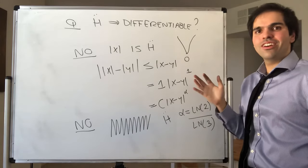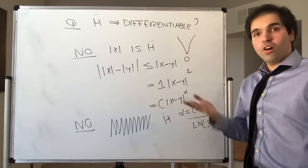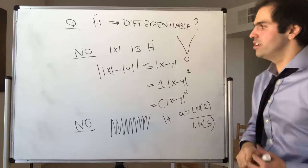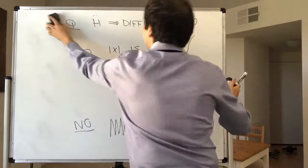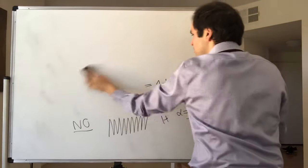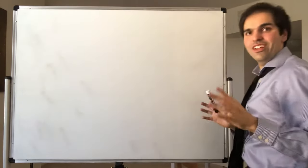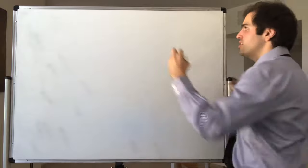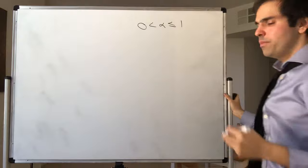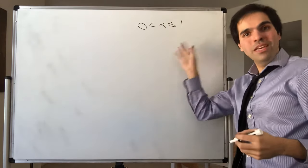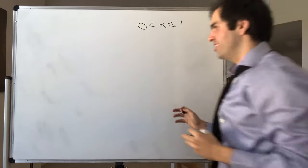There are definitely Hölder continuous functions that are not differentiable, but there are also differentiable functions that are not Hölder continuous — like e to the x, which just blows up and is definitely not Hölder. Also, Hölder continuity is only interesting when α is between 0 and 1, because it turns out that if α is bigger than 1, then the only Hölder continuous functions are constant functions.